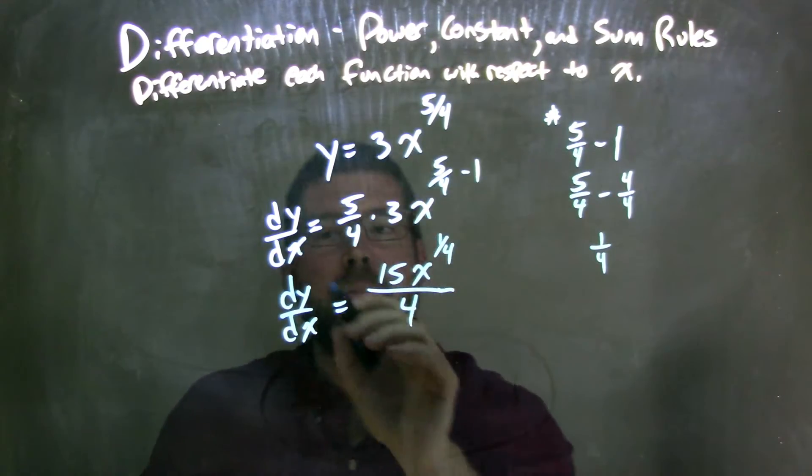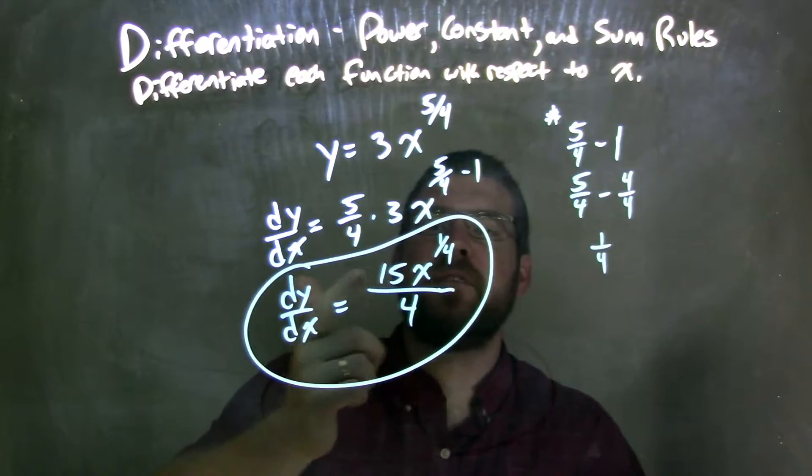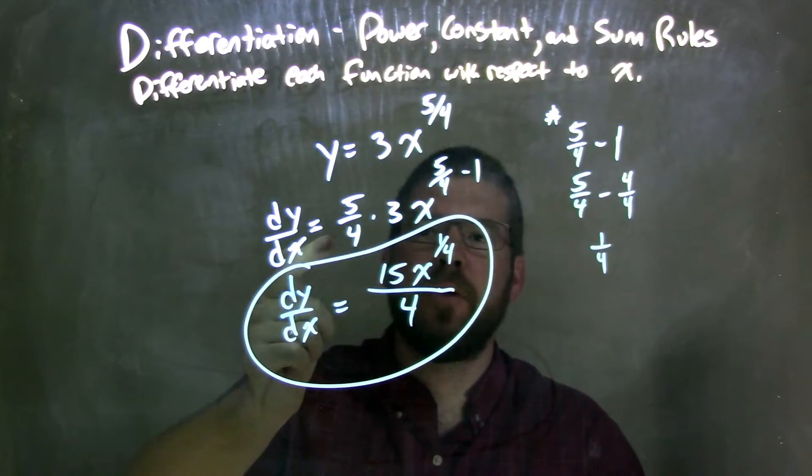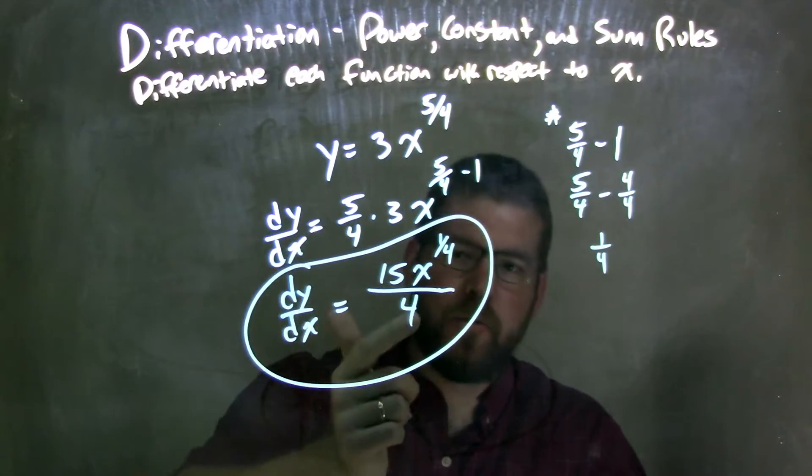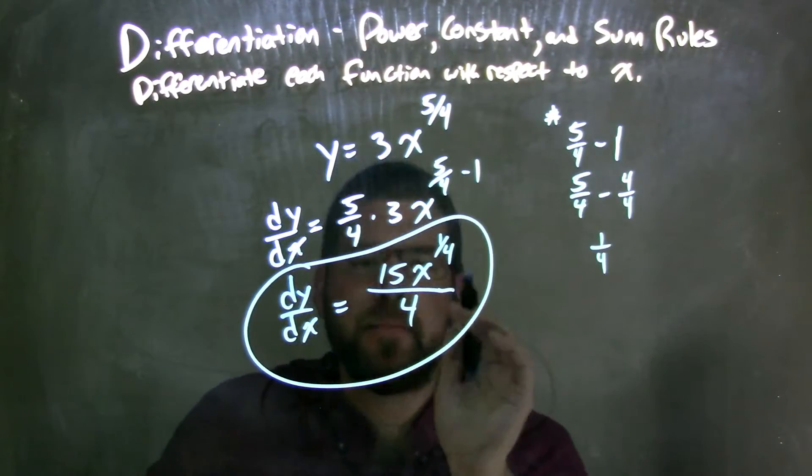It helps you definitely with your notes, but it leaves me with my final answer here of dy/dx is equal to 15x to the 1/4 power all over 4. Remember that multiplied by 4, or that 1/4 right there, 4 goes underneath, so the 5/4, 5 times 3 is 15, 4 goes in the denominator, and there we have it.